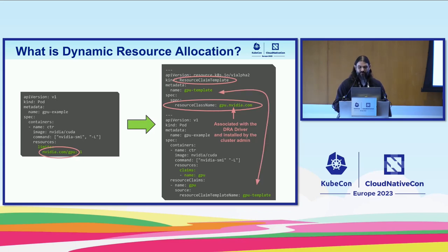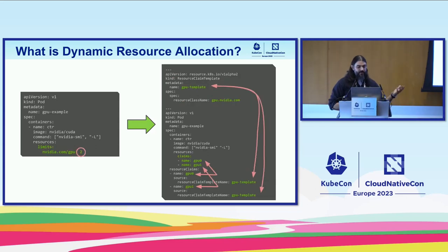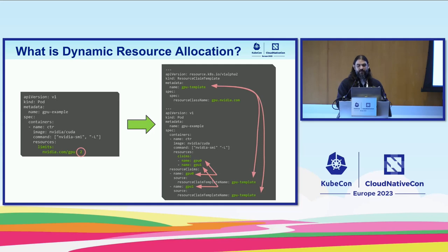Once you have this resource claim template in place, in your pod spec there's a new section called resource claims where you refer back to the name of that resource claim template, create a local name for containers to reference, and then put that under a new claims section in your resources spec. The driver will then allocate a GPU for your container, and when your container comes up, you'll have access to it. For two GPUs, you'd reference the claim template multiple times with different local names.